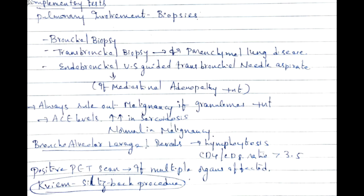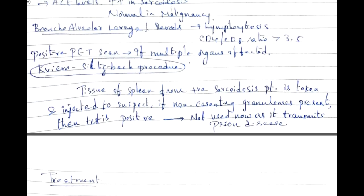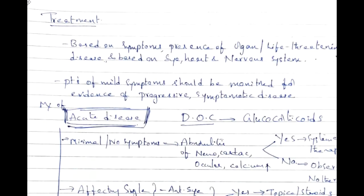Always rule out malignancy when granulomas are present — ACE levels are increased in sarcoidosis but normal in malignancy. BAL shows lymphocytosis with CD4/CD8 ratio greater than 3.5. Positive PET scan shows multiple organ involvement. The historical Kveim-Siltzbach procedure — where splenic tissue from a sarcoidosis patient is injected into the suspect and non-caseating granulomas indicate a positive result — is no longer used because it transmits prion disease (Creutzfeldt-Jakob disease).